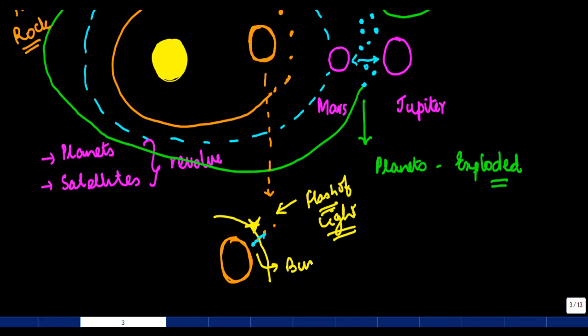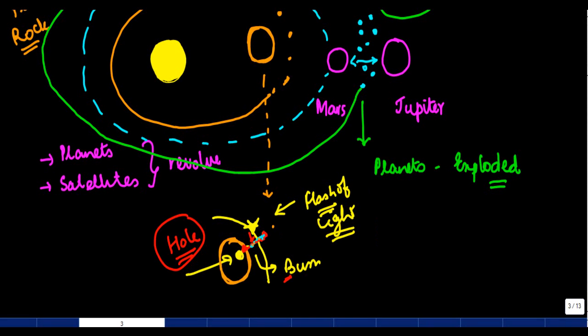because of this friction. They start burning and they fall on the Earth and create a hole. So they just come, they create a friction, they start burning, they fall, and then many times create a hole. This is a meteorite.